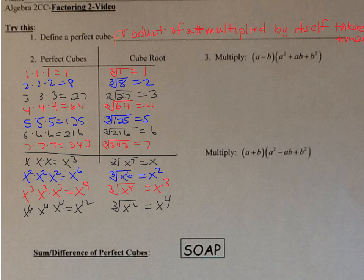Hopefully you see a pattern — over here the exponents are all multiples of 3. To get the cube root, you just take the exponent and divide by the index. 6 divided by 3 is 2, 9 divided by 3 is 3, 12 divided by 3 is 4.